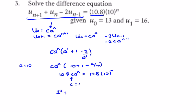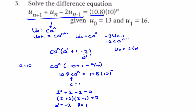Now we solve the characteristic equation: x² + x − 2 = 0, which factors as (x+2)(x−1) = 0. So α = −2 and β = 1. The general solution is u_n = l·α^n + m·β^n, plus the particular solution c·a^n = 1 times 10^n, giving u_n = l·(-2)^n + m·(1)^n + 10^n.